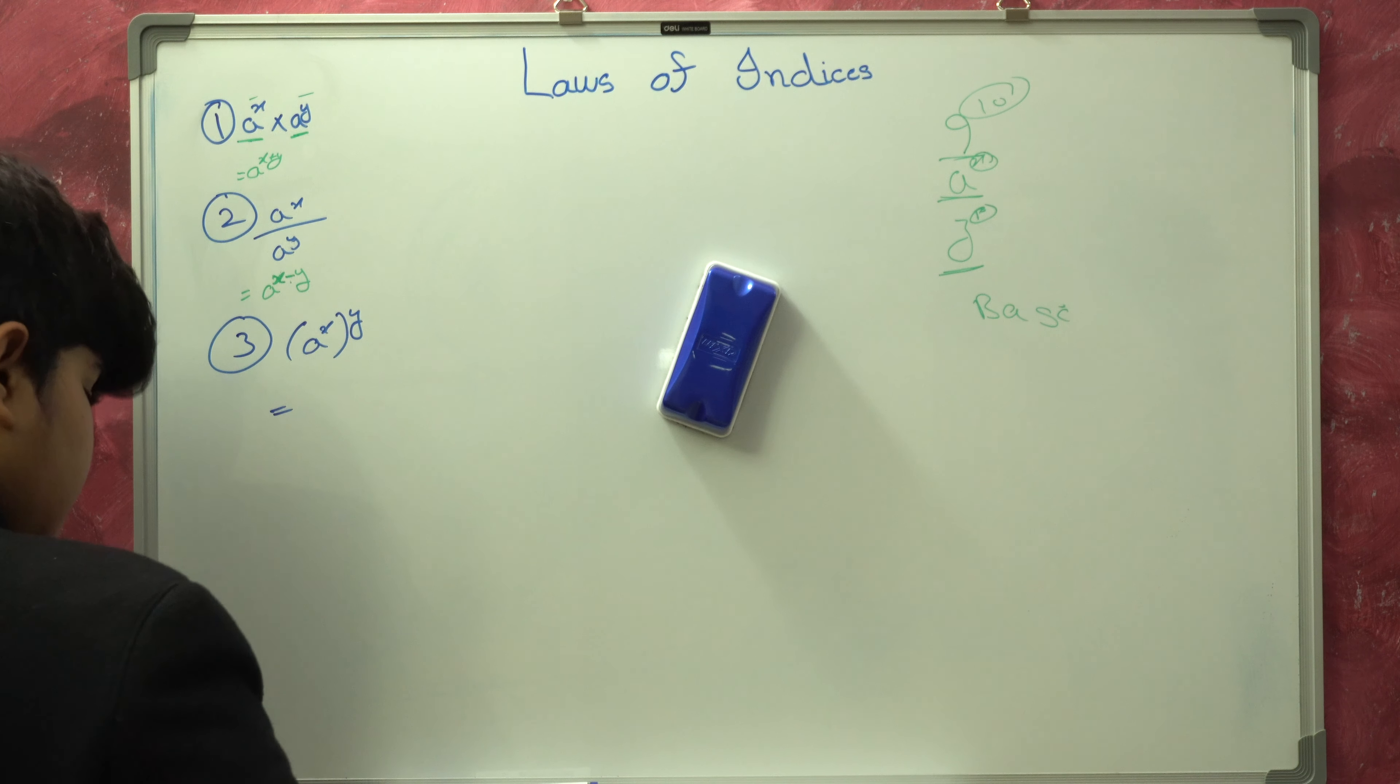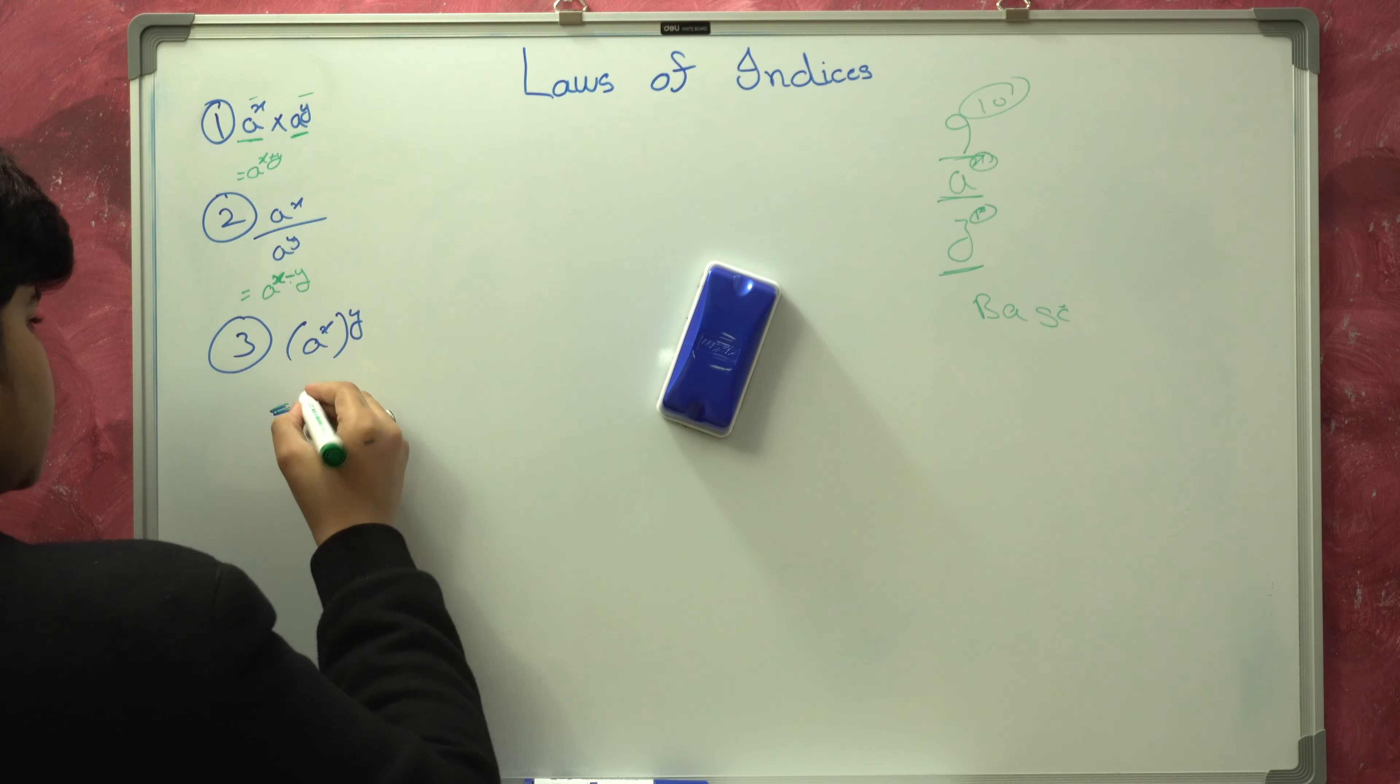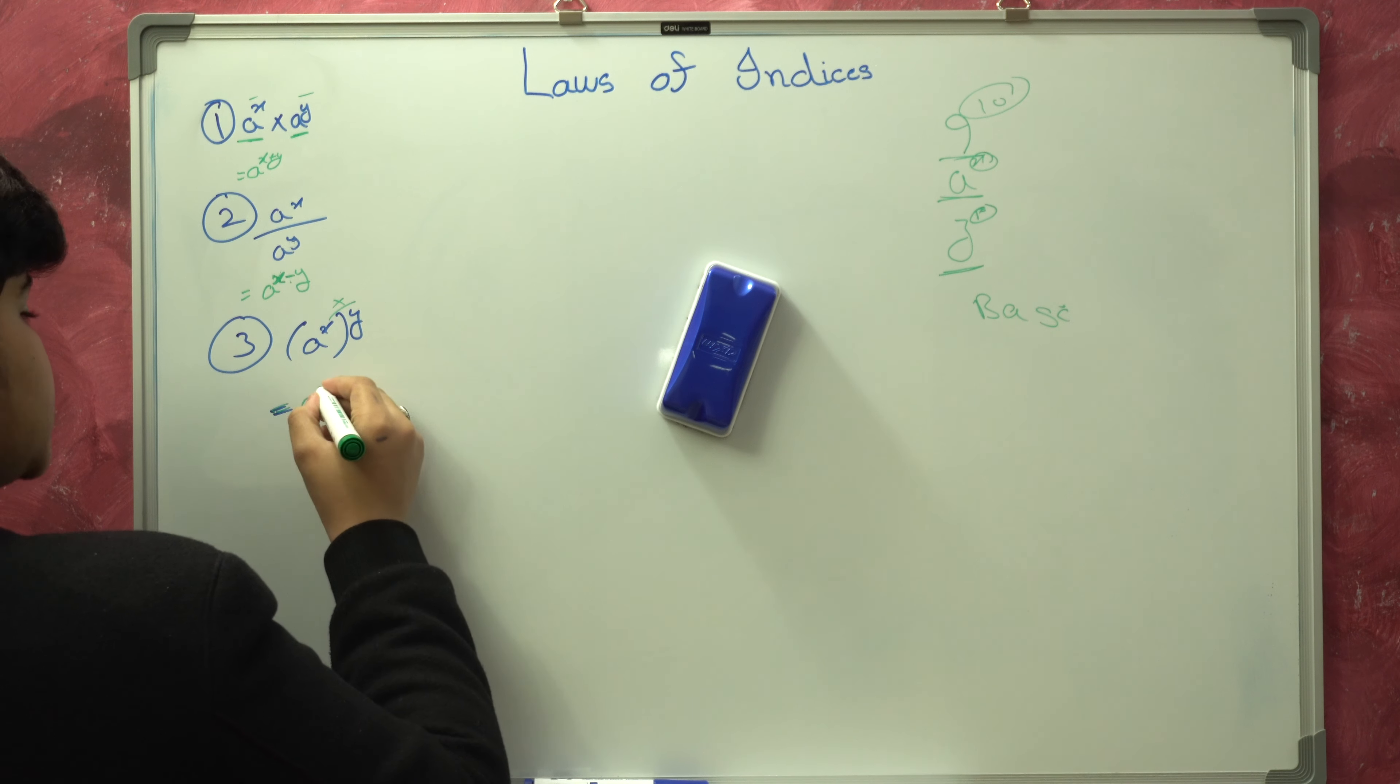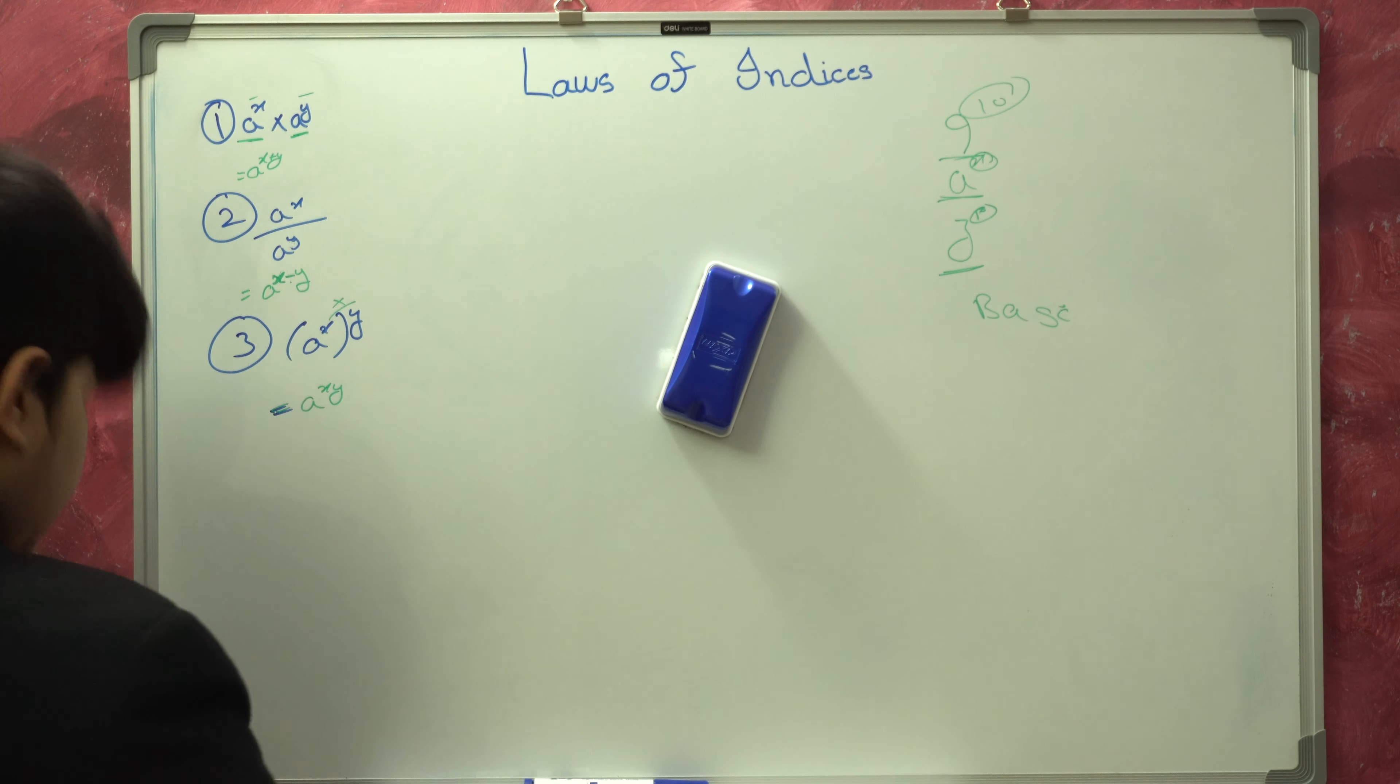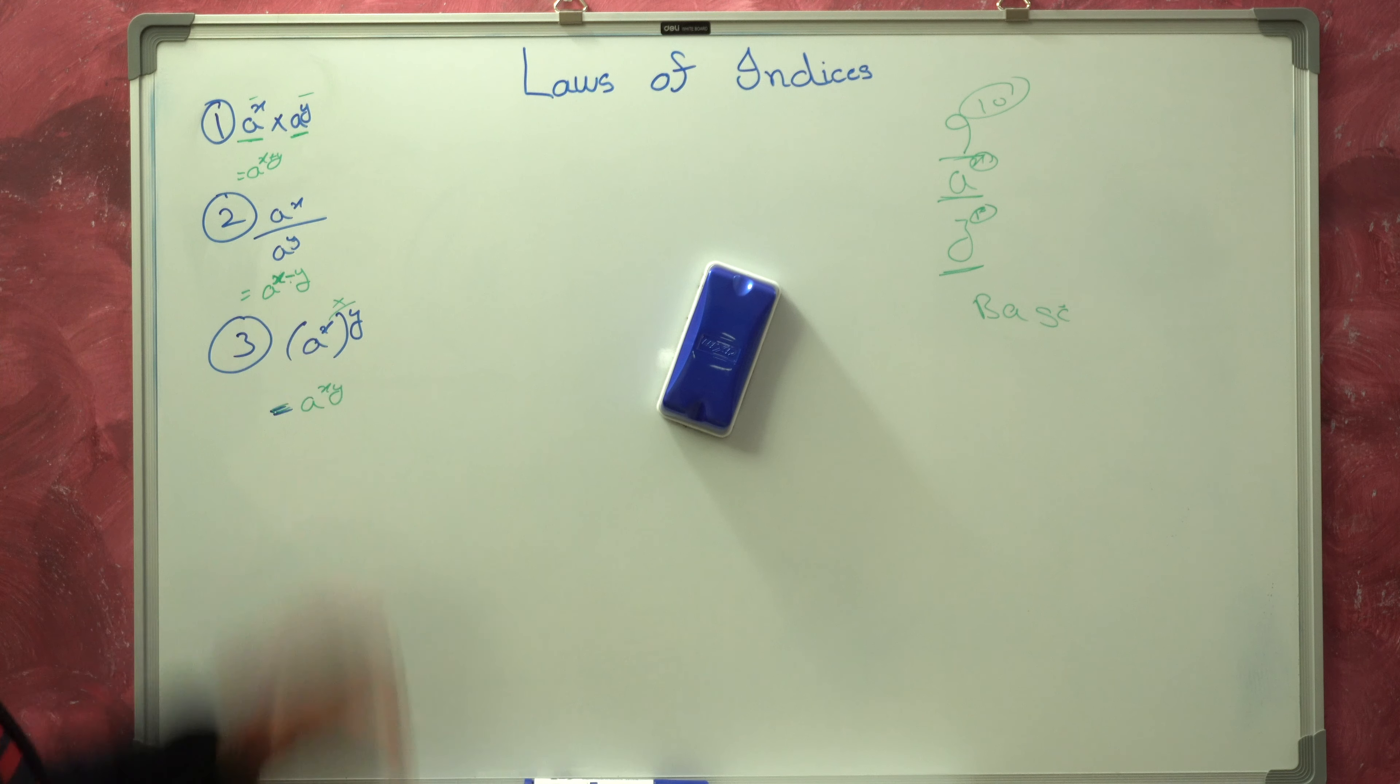Your answer is going to be A to the XY. It means it is just a simple and really easy law that if a base with a power, in this case has an X inside a bracket, the power is also mentioned. So both the powers basically multiply.